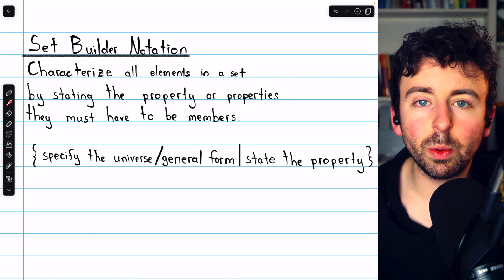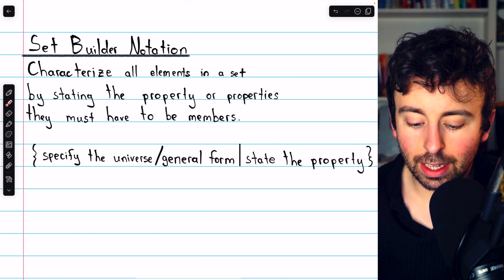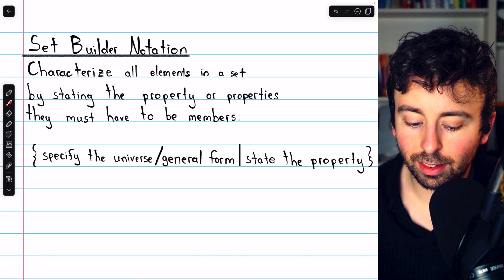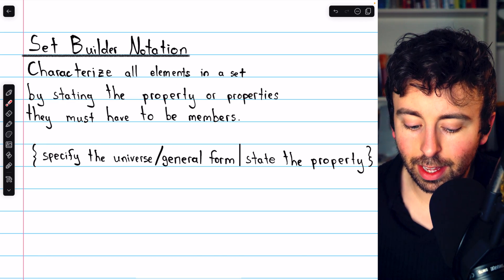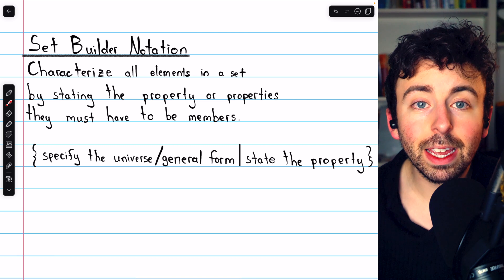Set builder notation is a really handy way of describing sets. It characterizes all elements in a set by stating the property or properties that elements must have to be in the set.